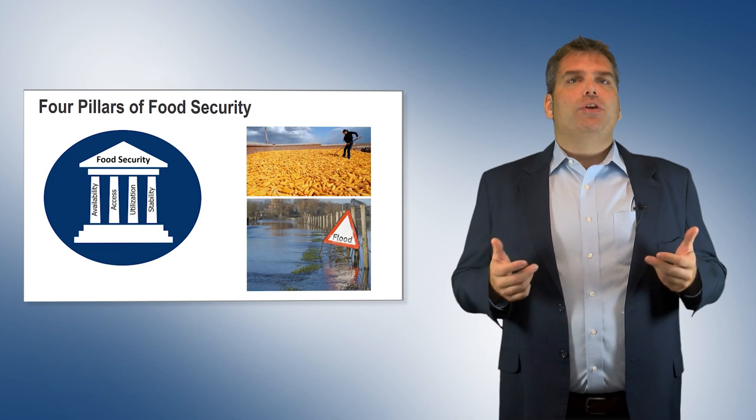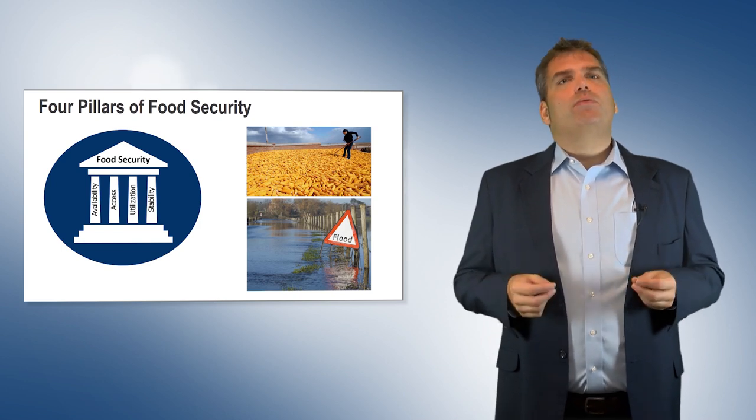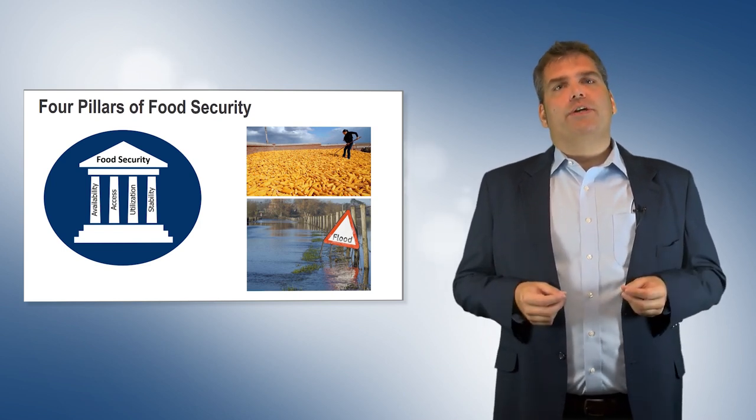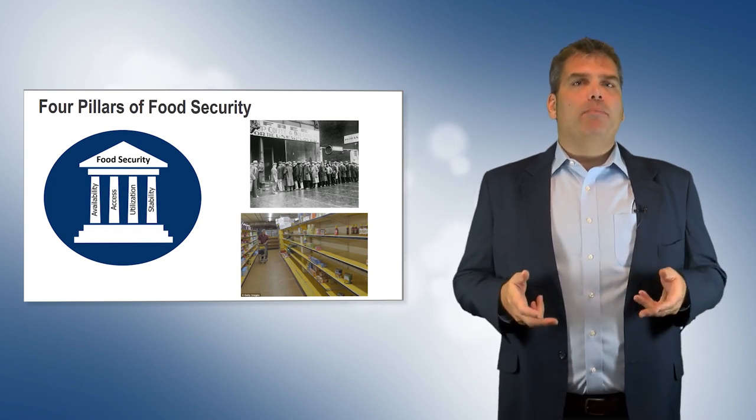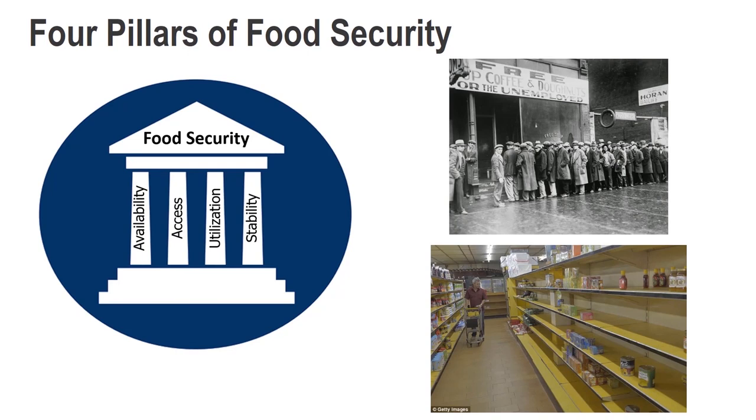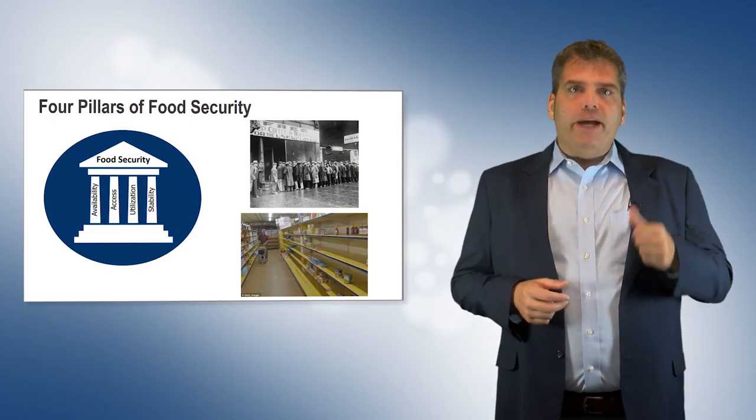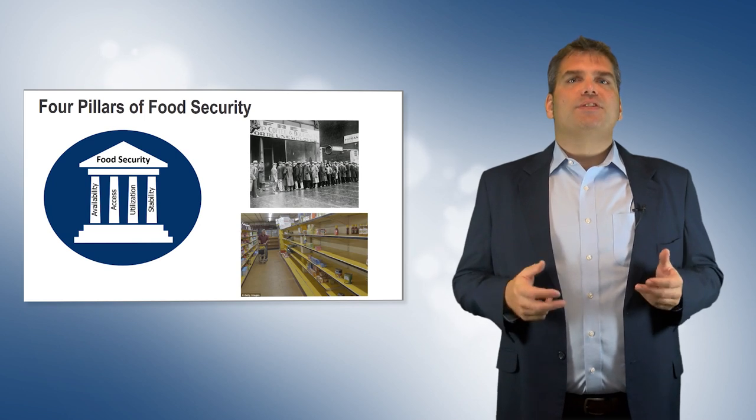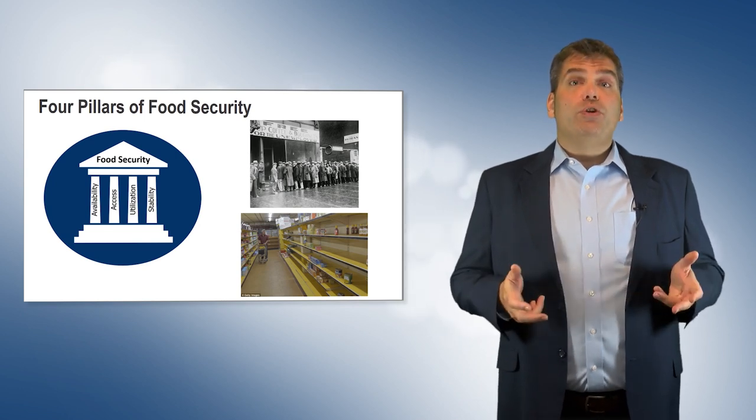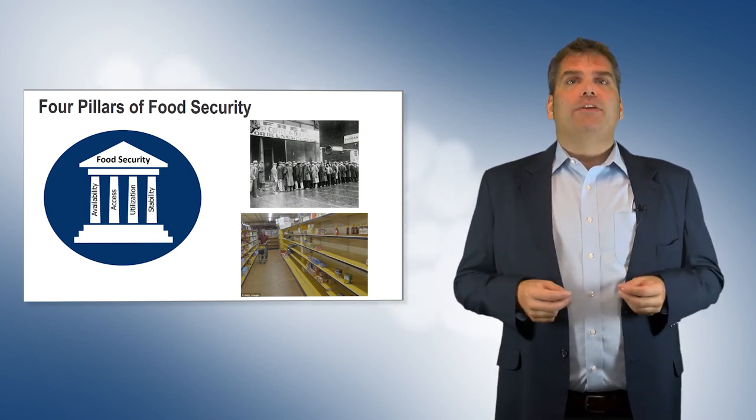Access, utilization, and stability represent the demand side of food production. Access refers to the purchasing power of a population. There can be an adequate food supply, but if the population is economically poor, they can't afford to buy it. Price spikes due to local or global food shortages can prevent access to the world's poor, while richer populations remain unaffected.